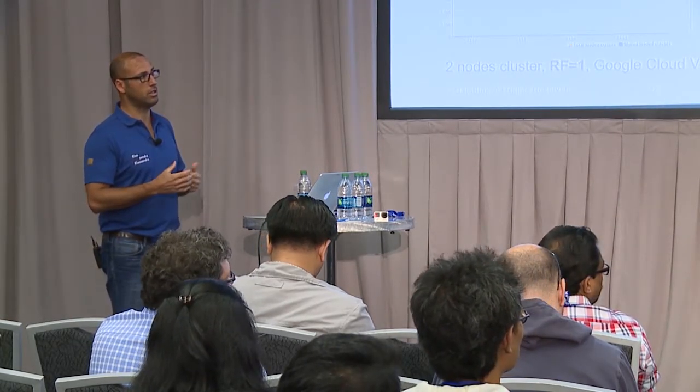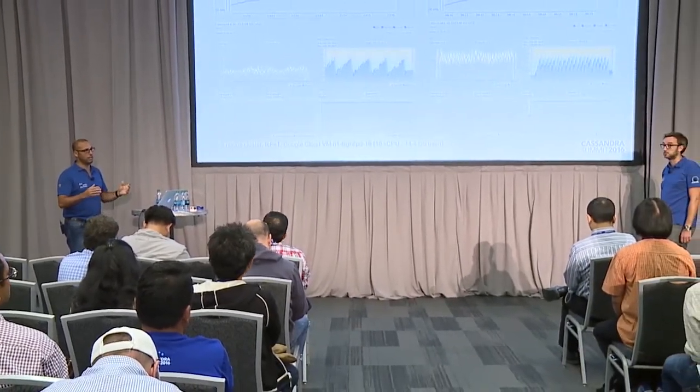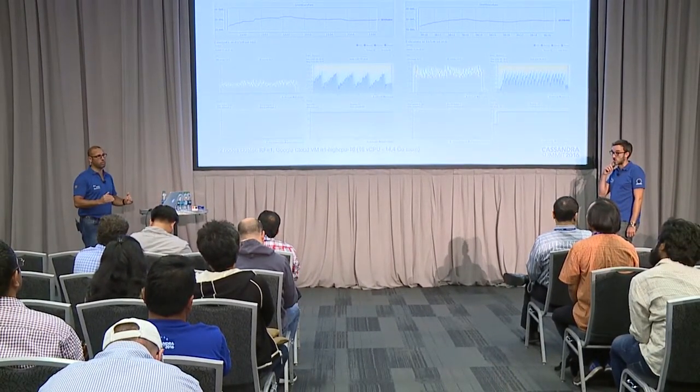Our main focus was on Elasticsearch because our developers wanted to use it — there are many cool features like nested documents, querying multiple indices at once, and a better Suggester. It's the same kind of solution — Cassandra plus a search engine — just not the same search engine. Under the hood it uses Lucene.